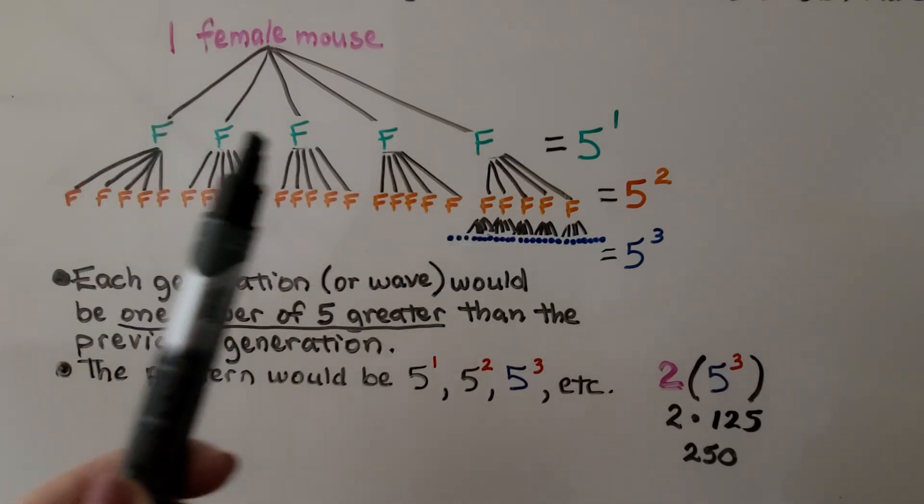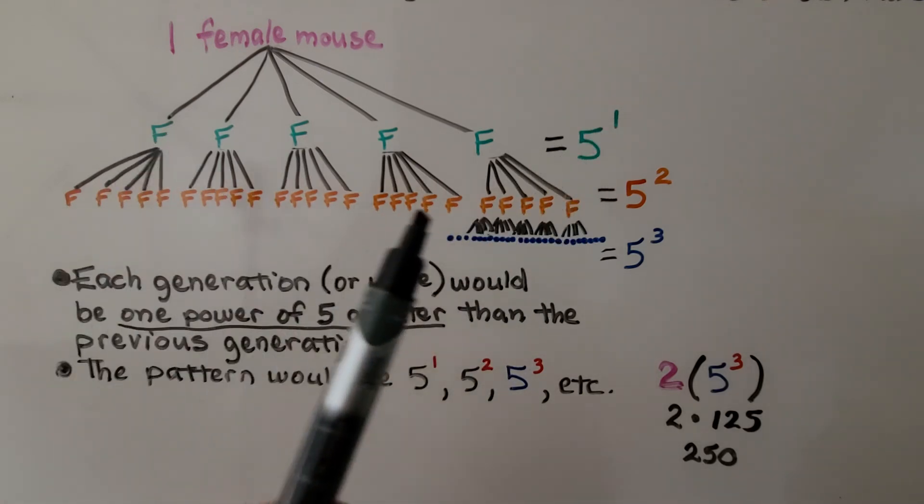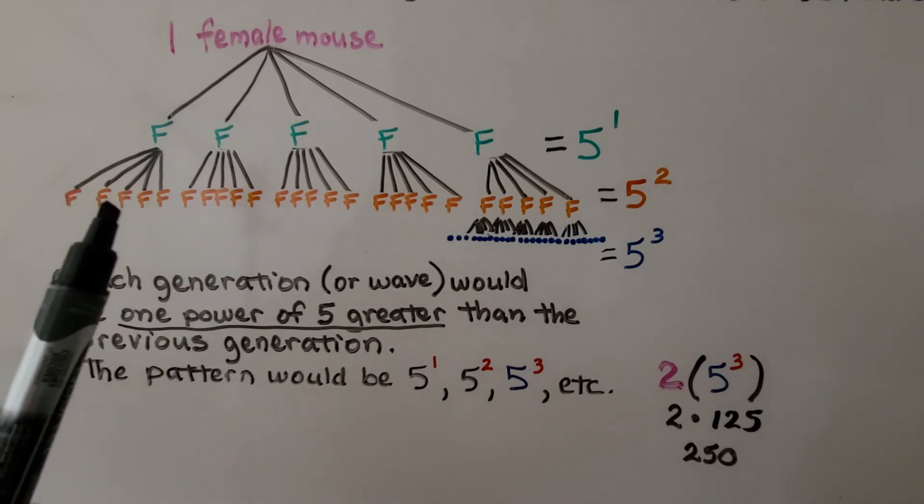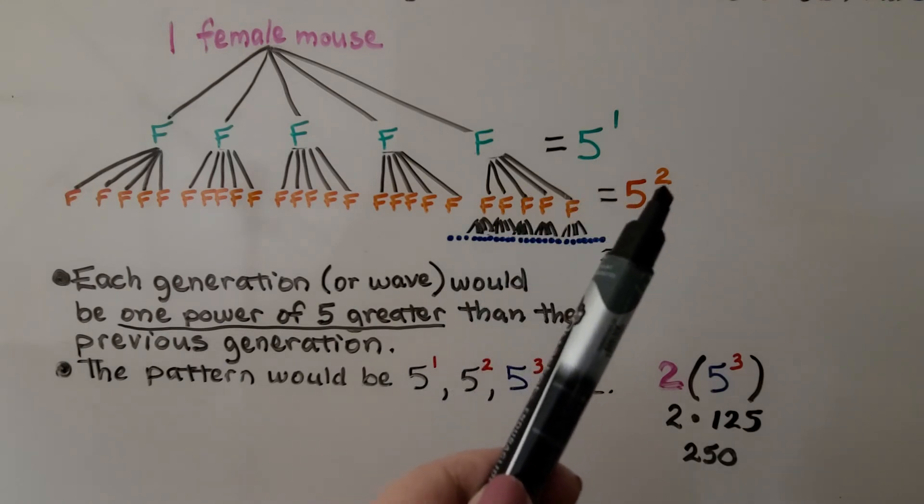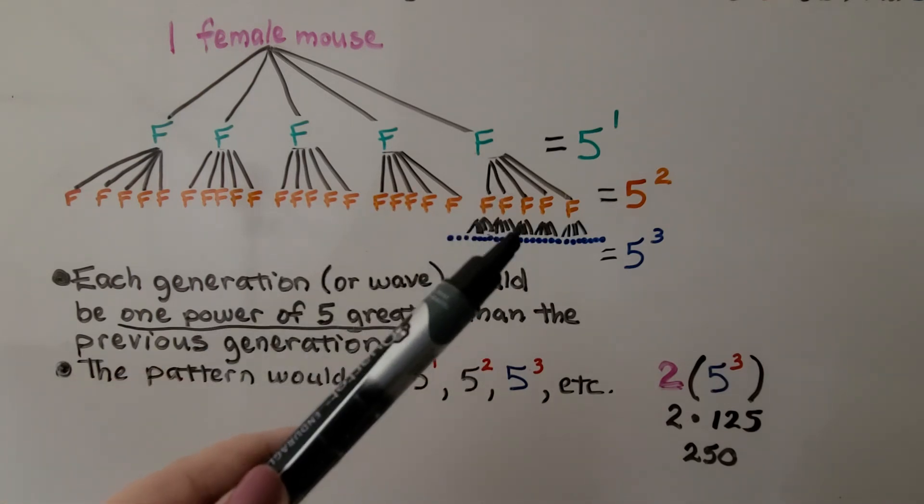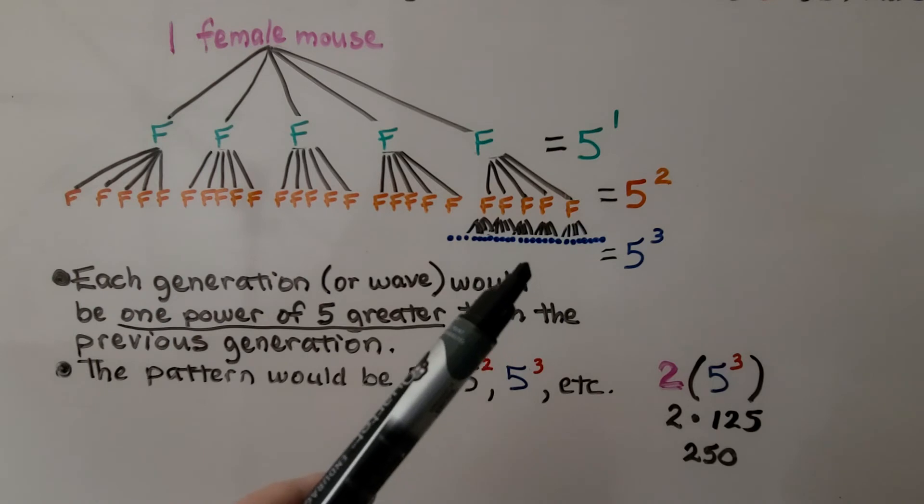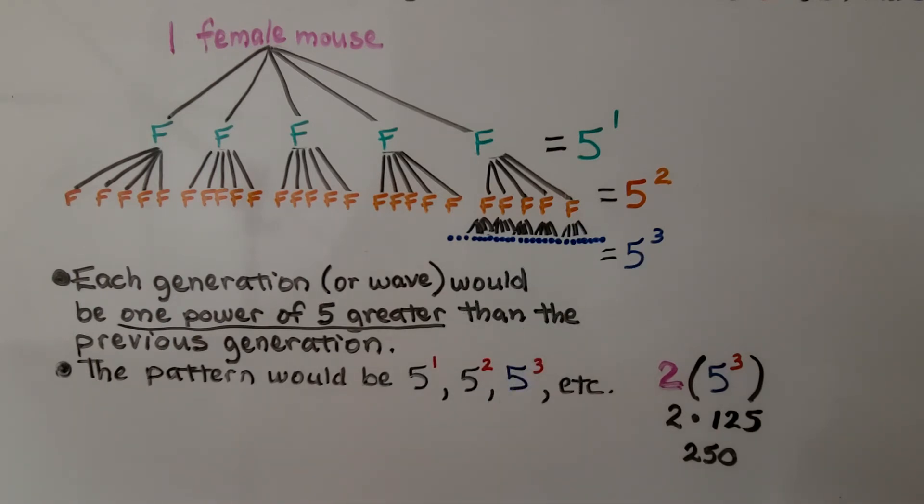One female mouse has 5 female babies. That's going to be 5 to the first power. That's 5. She has 5 babies. If each of them has 5 female babies, now we've got 5, 10, 15, 20, 25. We've got 5 raised to the second power. See what happened when we went down another generation? And if each of these orange ones had 5 babies each, it would be 5 raised to the third power. Each generation or wave would be 1 power of 5 greater than the previous generation. And the pattern would be 5 to the first power, 5 raised to the second power, 5 raised to the third power, and so on.